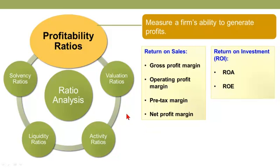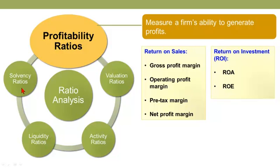Hi, this is David Bonner-Turtle continuing with a CFA Level 1 review of financial statement analysis, specifically ratio analysis. We've previously looked at activity ratios, and then in the last two videos, liquidity ratios and solvency ratios. Now we can look at liquidity and solvency from a defensive perspective, or from the perspective of a lender concerned with the long-term health of the firm or its short-term ability to meet cash. So we shift from a defensive perspective to a more proactive perspective — that of an investor concerned with the profitability of the firm.